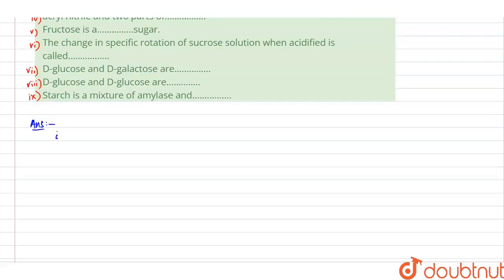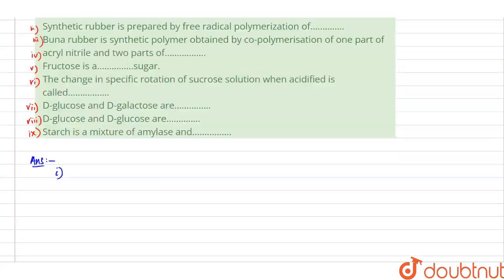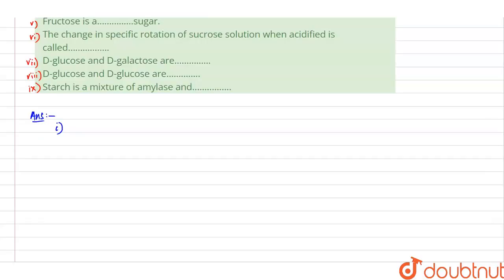So the first one is: Nylon 66 is a condensation polymer formed by reaction between adipic acid and what? Okay, so the second compound is hexamethylenediamine.